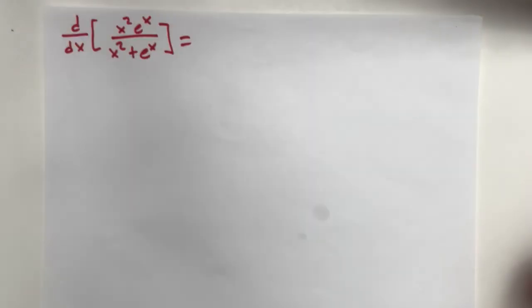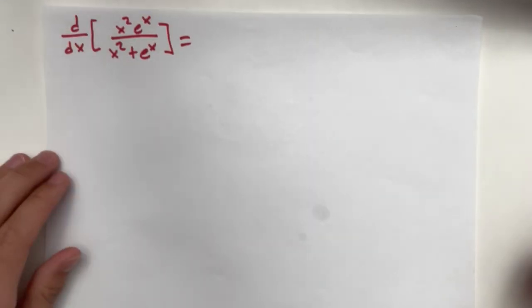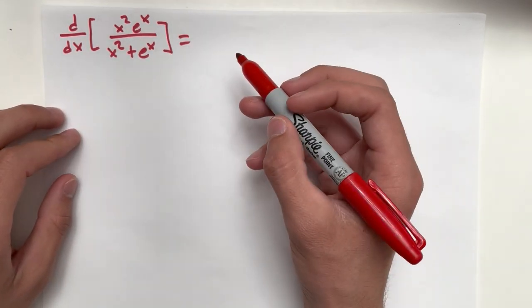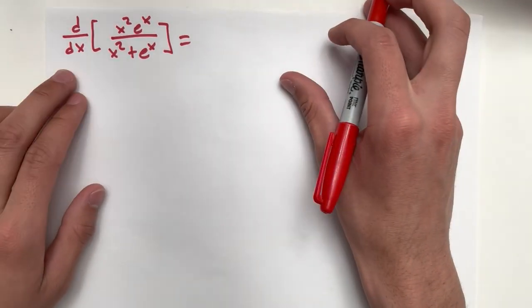The derivative of x squared times e to the x all over quantity x squared plus e to the x. So this is going to be a nice quotient rule type problem.